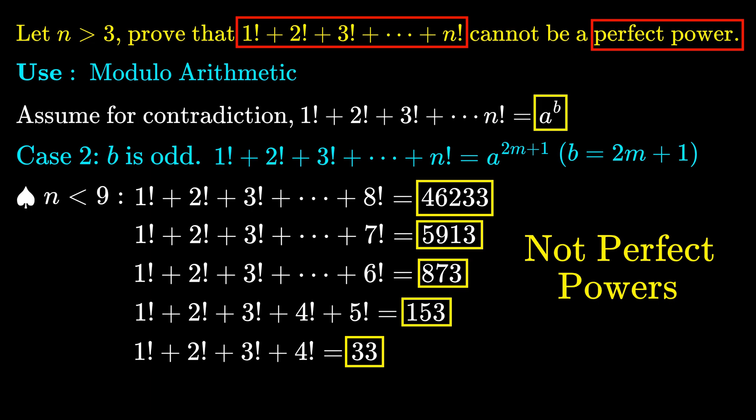Hence, when b is odd, the sum cannot be an odd power, and this ultimately proved the whole statement of the problem.